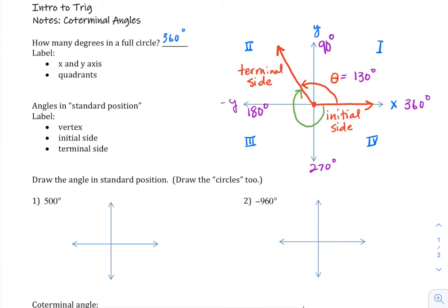Let me draw that. So here's an angle, but going in the other direction. Now if theta was 130 degrees, what is the measure of this angle? We'll call it angle alpha.